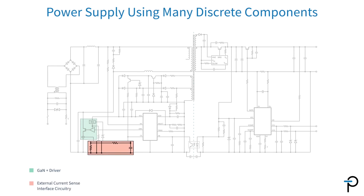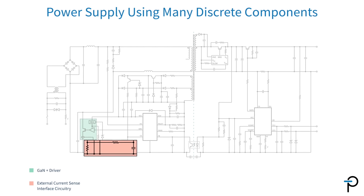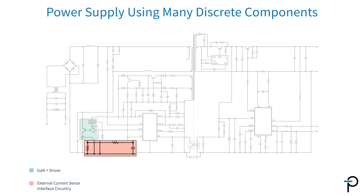I've just highlighted the external current sensing. That circuitry requires interface logic, amplifiers, and design. It also tends to limit the dynamic range of the power supply in both voltage and current.